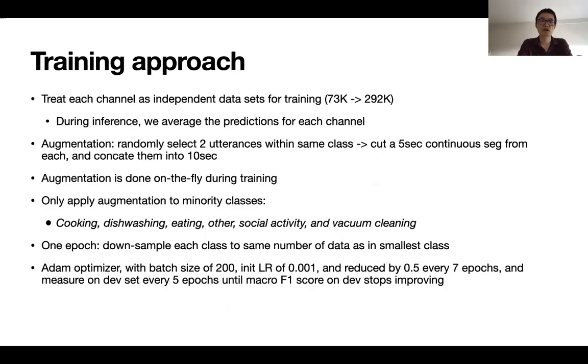So the training approach is as follows. We treat each channel as an independent dataset for the training dataset. So because each utterance has four channels. So in total, we augment the training data from 73,000 to 292,000. And during inference, we average prediction for each channel for each dataset. And the augmentation method we use simply randomly chooses two utterances within the same class. Then we cut a five-second continuous segment from each utterance. Then we concatenate them into a new 10-second utterance as new training data. And we do this on the fly.